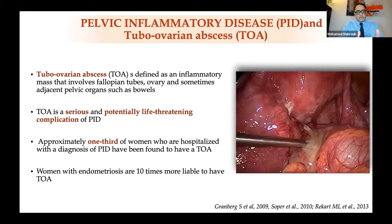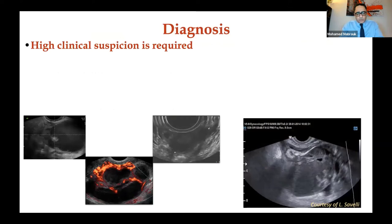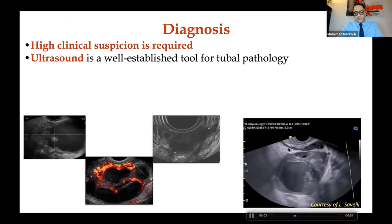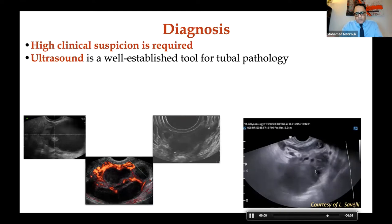It's important to remember that a patient who has endometriosis and presents with tubo-ovarian abscess is a serious problem. If surgery is needed, this is very complex surgery requiring the most senior surgeon on the team. Clinical suspicion is the most important thing. Imaging is also very important — ultrasound, CT, or MRI.